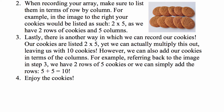However, we can also add our cookies in terms of columns. For instance, referring back to the image, we have two rows of five cookies. We can simply add the two rows — five plus five — giving us a total of ten cookies.